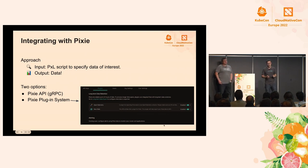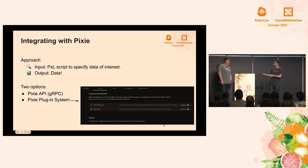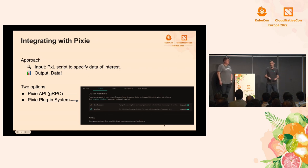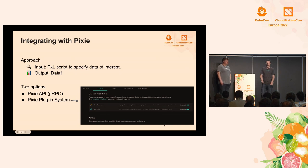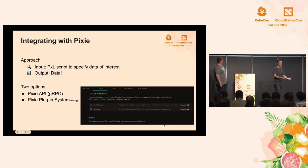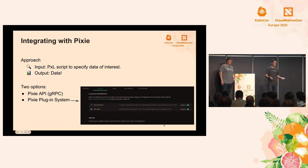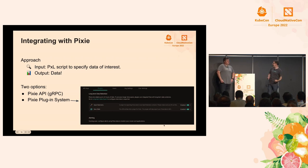The last thing I wanted to mention about Pixie before handing it to Matt is how you can integrate with Pixie, which will be important when Matt wants to show pulling data into CI pipelines. Pixie has a number of ways to integrate. There's a gRPC API you can interface with. The input is essentially a pixel script — you provide the query that chooses the sort of traffic you want to extract from Pixie, whether all errors, all HTTP traffic, or whatever you're looking for. There's also a plugin system that lets you export data for tighter integration with other tools.